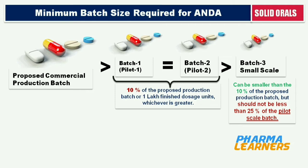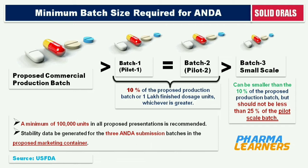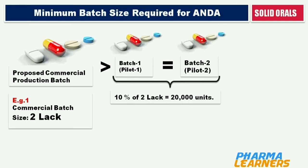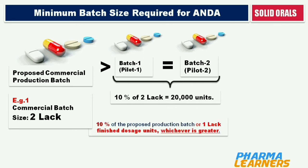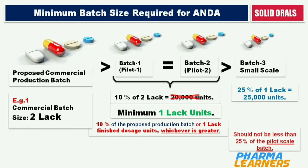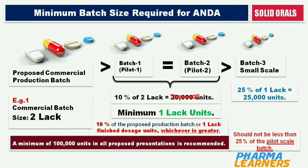FDA also says that a minimum of 1 lakh units in all proposed presentations is recommended, and stability data of all 3 batches should be generated in the proposed marketing container. For example, if the proposed commercial batch size is 2 lakhs, then 10% of 2 lakhs is 20,000 units. But the guideline says 10% of proposed production batch or 1 lakh finished dosage units, whichever is greater. So the minimum quantity of the 2 pilot batches is 1 lakh each. The 3rd batch should not be less than 25% of the pilot batch — 25% of 1 lakh is 25,000 — but again, as per guidelines, minimum quantity is 1 lakh. So in short, for solid oral dosage forms, the minimum quantity of all 3 batches should be 1 lakh units each.